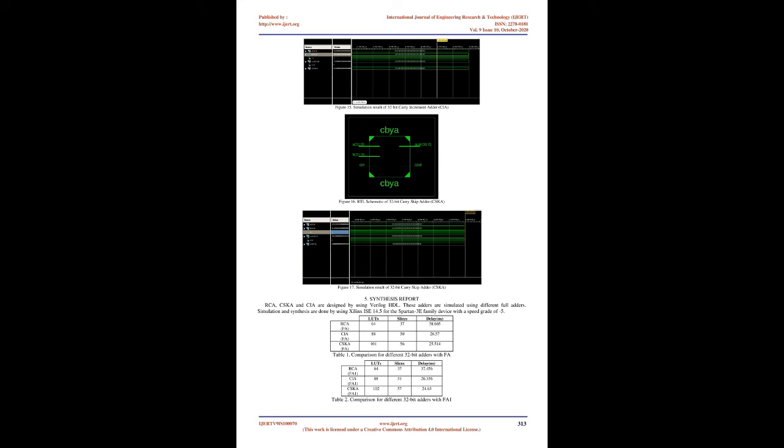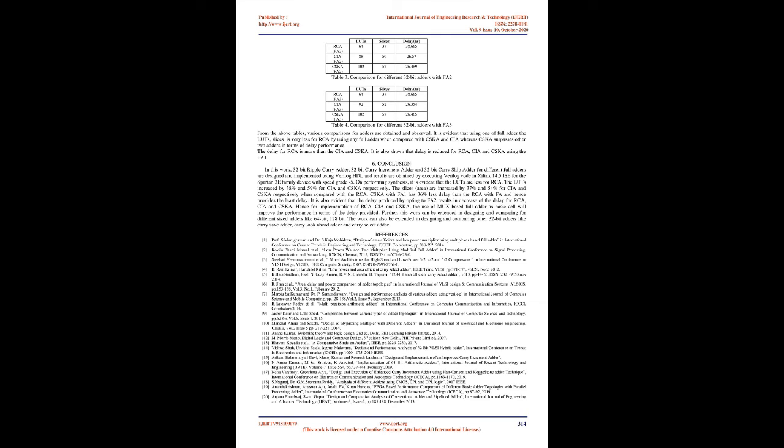Conclusion: In this work, 32-bit Ripple Carry Adder, 32-bit Carry Increment Adder, and 32-bit Carry Skip Adder for different full adders are designed and implemented using Verilog HDL, and results are obtained by executing Verilog code in Xilinx 14.5 ISE for the Spartan 3E family device with speed grade minus 5. On performing synthesis, it is evident that LUTs are less for RCA. The LUTs increased by 38% and 59% for CIA and CSKA respectively. The slices (area) increased by 37% and 54% for CIA and CSKA respectively when compared with RCA. CSKA with FA1 has 36% less delay than RCA with FA, providing the least delay. It is also evident that opting for FA2 results in decreased delay for RCA, CIA, and CSKA.